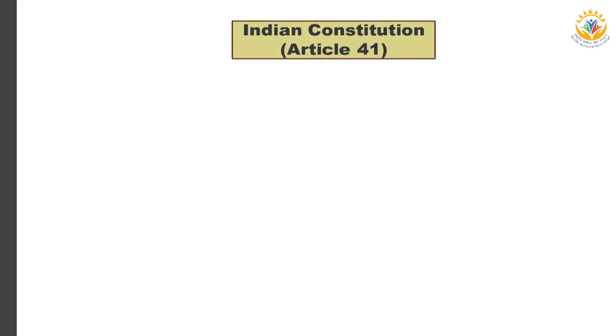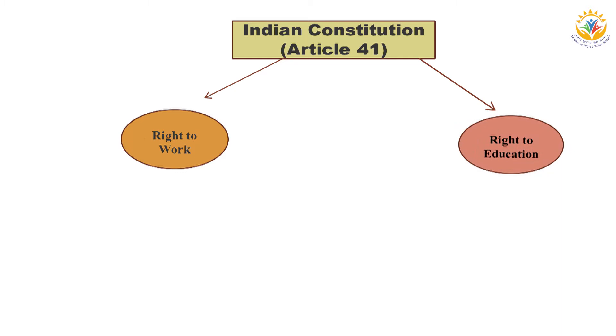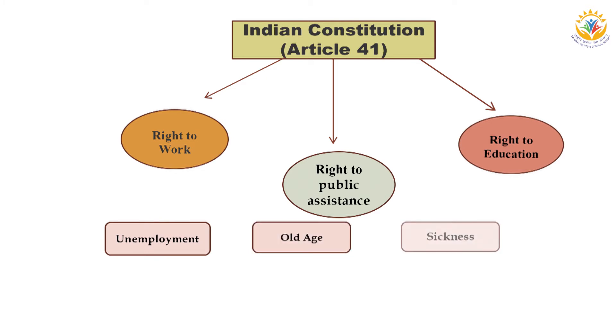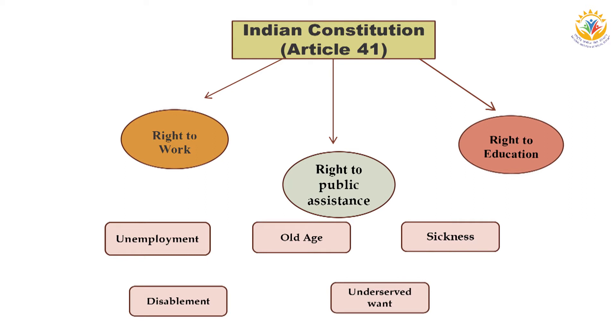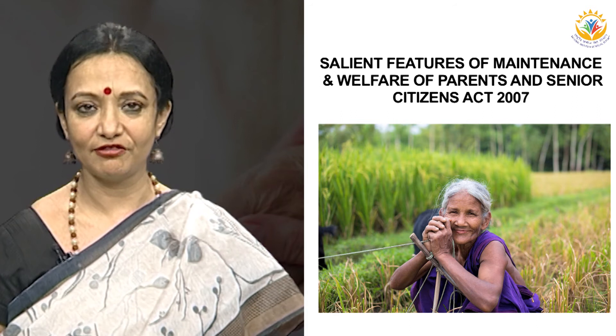Now let us discuss the constitutional provisions for the welfare of senior citizens. Article 41 of the Constitution provides that the state shall, within the limits of its economic capacity and development, make effective provisions for securing the right to work, to education, and to public assistance in cases of unemployment, old age, sickness, disablement, and other cases of undeserved want.